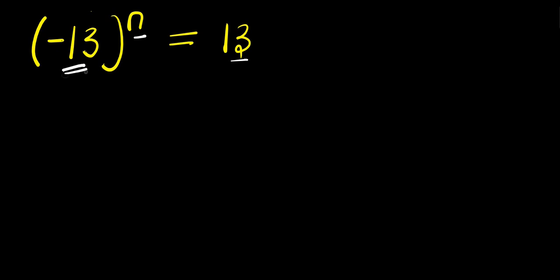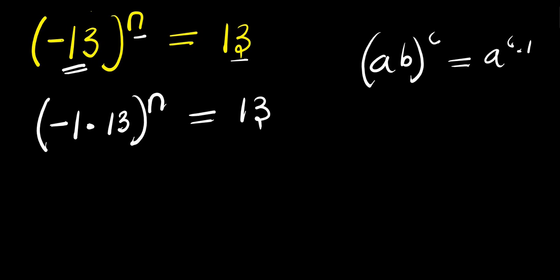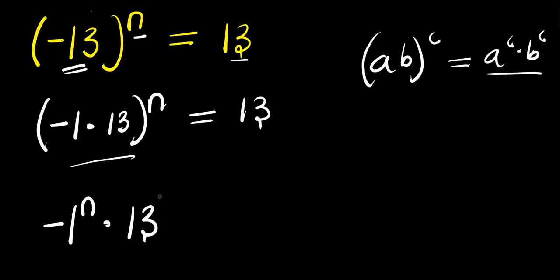We take negative 13 and express it as a product of negative 1 and 13. So what we are going to produce is negative 1 times 13 raised to the power of n, equals 13. Now if you have a times b raised to the power of c, this simply equals a to the power c times b to the power c. So we apply this identity to get negative 1 to the power n times 13 to the power n, equals 13.